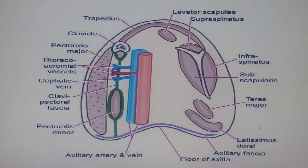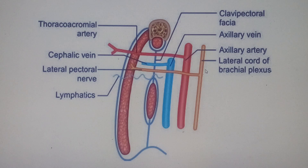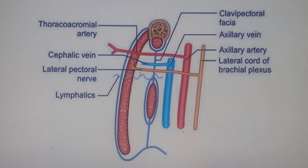So we have the thoraco-acromial artery, the cephalic vein — and I mentioned there will also be a nerve and a lymphatic. The nerve found here is the lateral pectoral nerve. The lateral pectoral nerve comes from the lateral cord of the brachial plexus. It has to pierce the clavipectoral fascia and come out to supply the pectoralis major muscle.